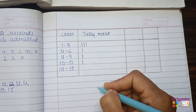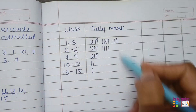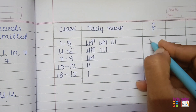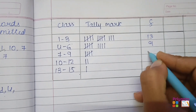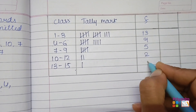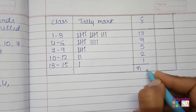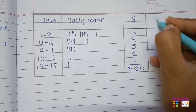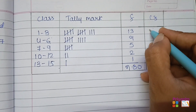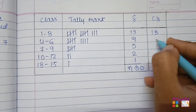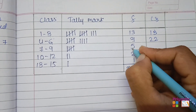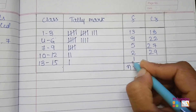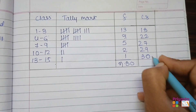After completing the tally marking, write down the frequencies: 13, 9, 5, 2, and 1. The total N is 30. Next, find the cumulative frequency: 13, then 13 plus 9 is 22, plus 5 is 27, plus 2 is 29, plus 1 is 30.